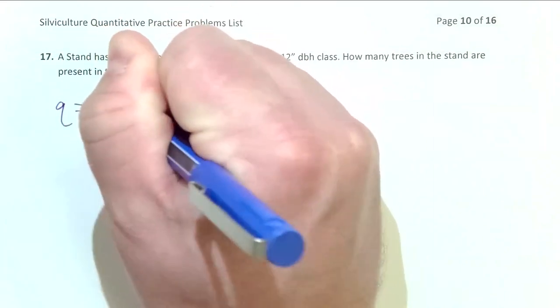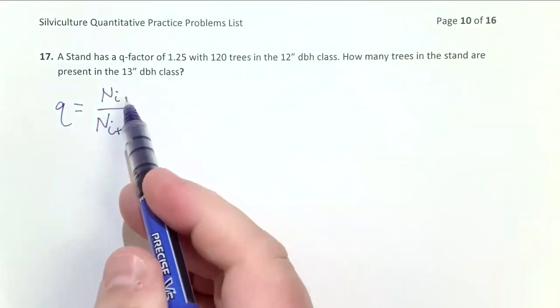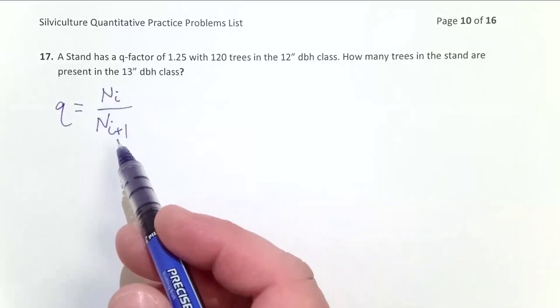Q equals N sub I over N sub I plus 1, where I is the size class and I plus 1 is the next largest size class.